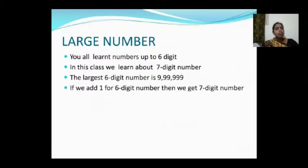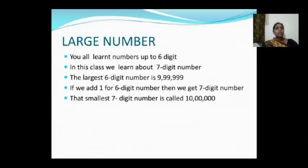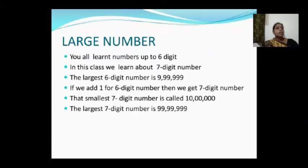If we add one to the largest six digit number, then we get a seven digit number. The smallest seven digit number is 10 lakh. The largest seven digit number is 99,99,999.